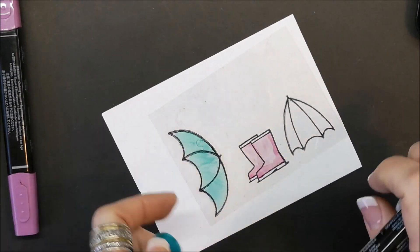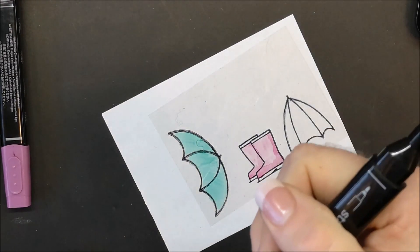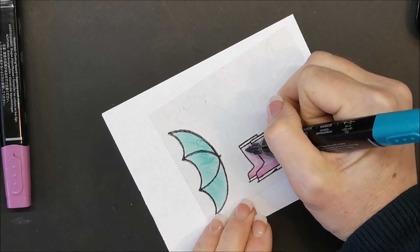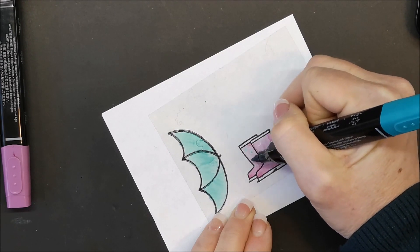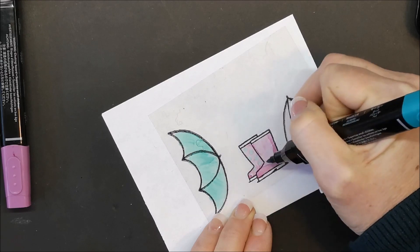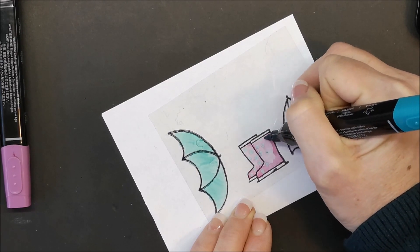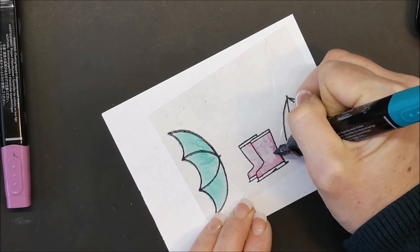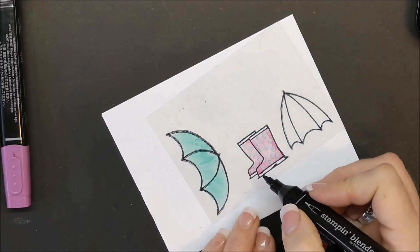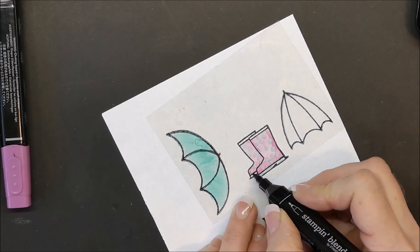I want to add a design to the boots and the umbrella with my dark Bermuda Bay so I'm going to use the fine tip and I'm just going to draw little circles and make a polka dot pattern on the boots. Where you place this Bermuda Bay it moves the Rich Razzleberry underneath it.